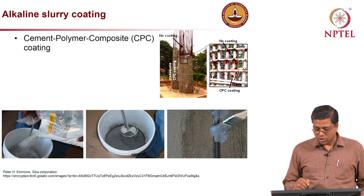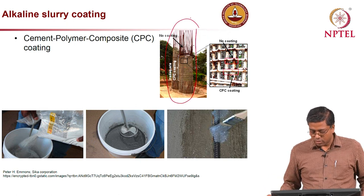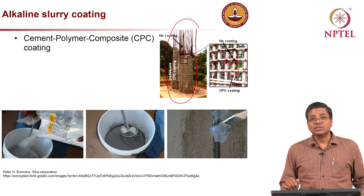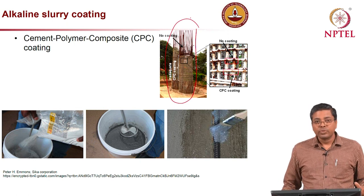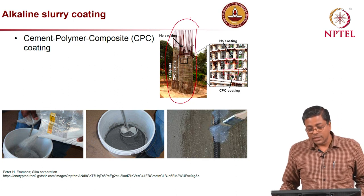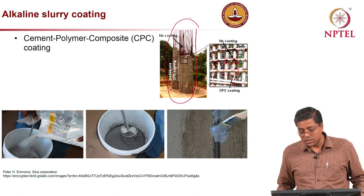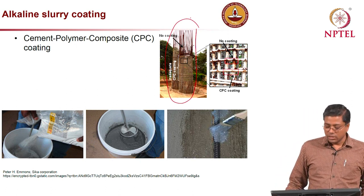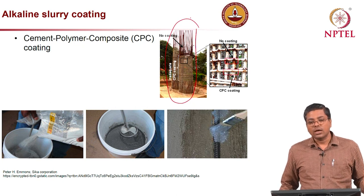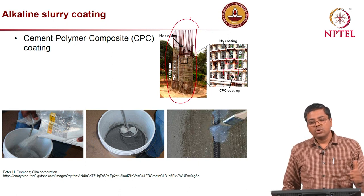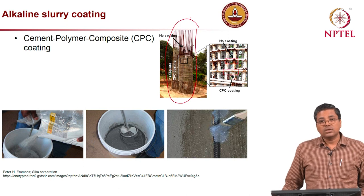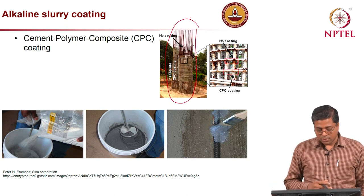An example is a pile construction for a coastal bridge where this kind of coating was applied — though in that picture it was not adequately applied. When coatings are not applied properly, you do not get good protection; rather, it adversely affects the performance of the steel. A good coating should be applied continuously on the steel surface; otherwise it reduces protection or makes the steel more vulnerable to corrosion.